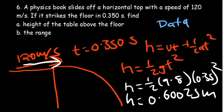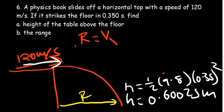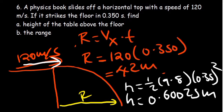For the range, since velocity in X is constant throughout motion: range = Vx × t = 120 × 0.350 = 42 meters. That's the horizontal distance from the table edge to where the book lands. That's it for this video — thank you very much for watching.